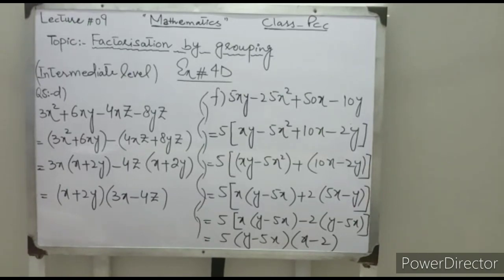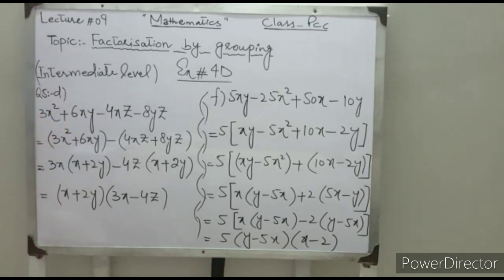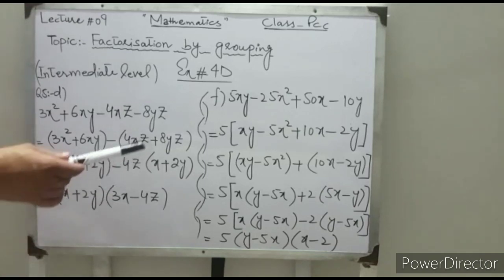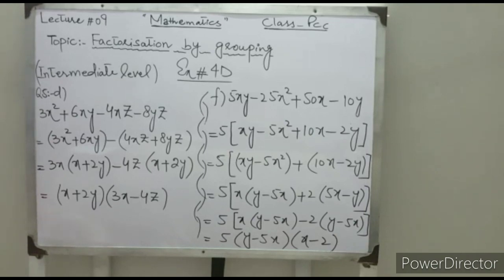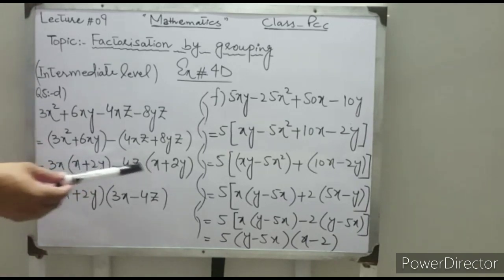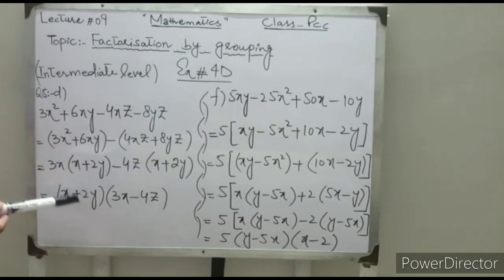In question 5 part D: 3x² plus 6xy minus 4xz minus 8yz. By grouping: first group is 3x² plus 6xy, second group is minus 4xz minus 8yz — take minus common from the second group. In the first group, 3x is common leaving (x plus 2y); in the second group, 4z is common also leaving (x plus 2y). Take (x plus 2y) common — the final answer is (x plus 2y)(3x minus 4z).